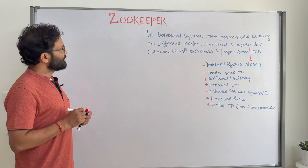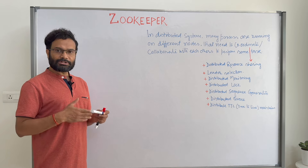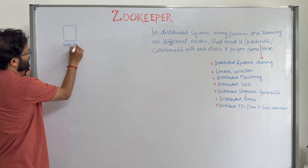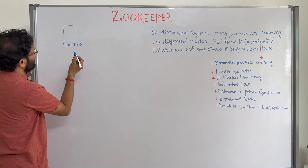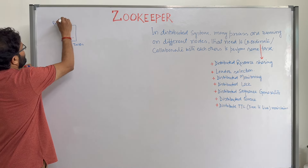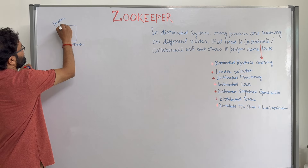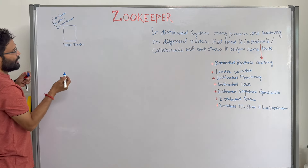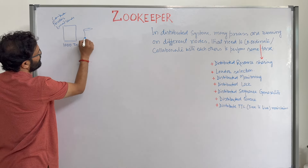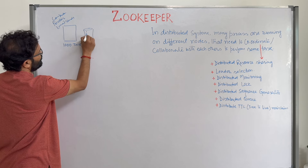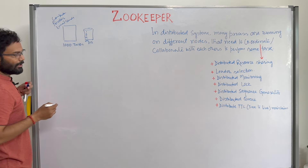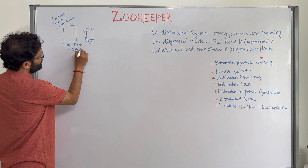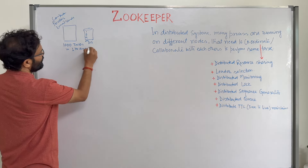For now, forget everything about ZooKeeper and let us focus on one use case — one problem statement. Suppose we have a thousand tasks. Those tasks could be anything: printer jobs, email sending, or any computation tasks. These tasks are saved in a database with row numbers one to one thousand, and we have to complete them within one hour.